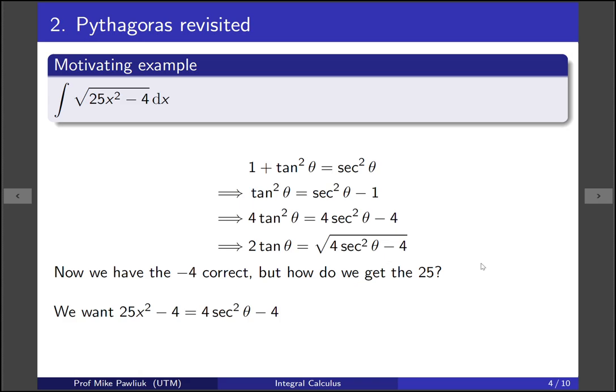Let's solve for x, and that will tell us what our substitution should be. Add 4 to both sides gives us 25x squared equals 4 secant squared. And now solving for x gives us that x should be the square root of 4 over 25 secant, or in other words, 2 over 5 secant.